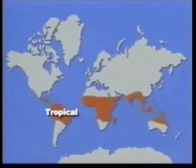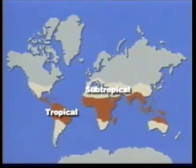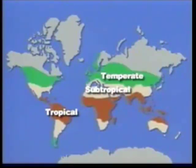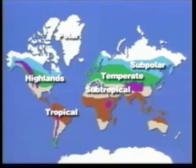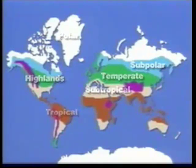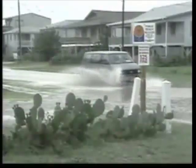Geographers divide the world into six main climatic regions: tropical, subtropical, temperate, subpolar, polar, and highlands. Each of these climatic regions is defined by both temperature and precipitation. For instance, places with a subtropical climate would be described as having hot, dry summers and cool, rainy winters.